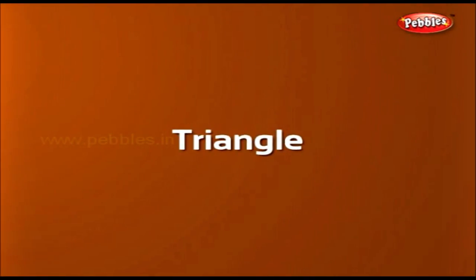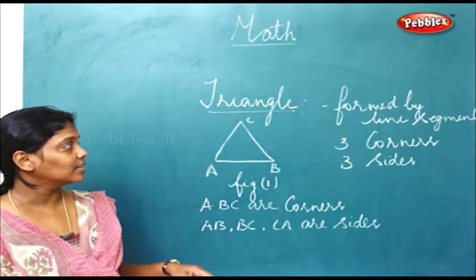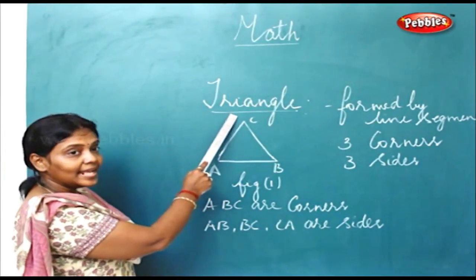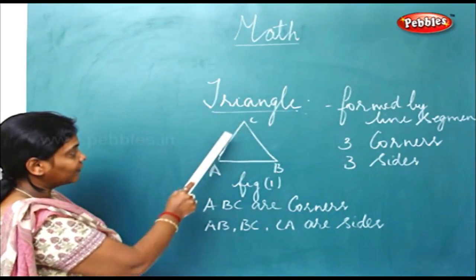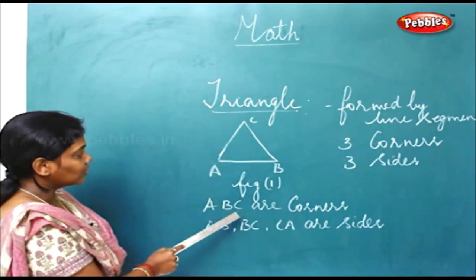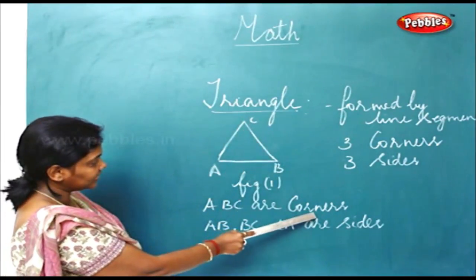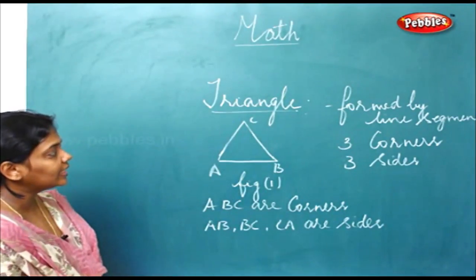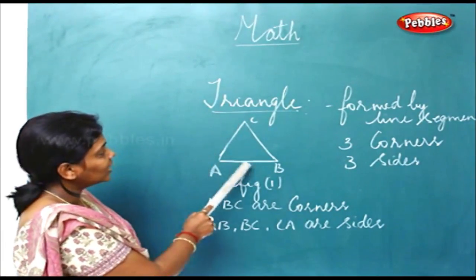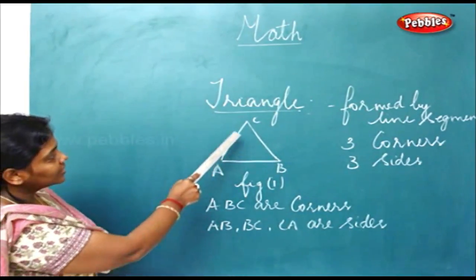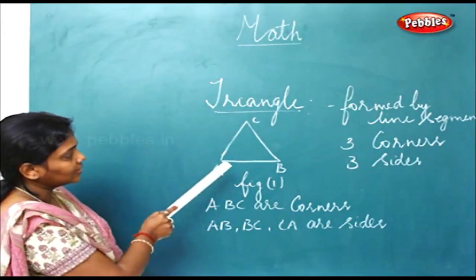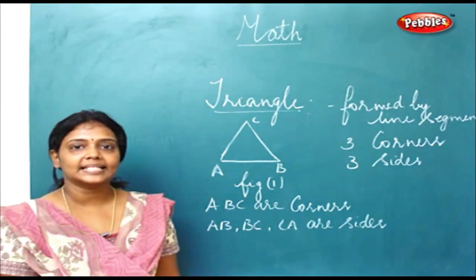Triangle. We earlier saw a square and a rectangle. Now the next shape we are going to see is called a Triangle. From the name 'Tri,' you can see you have 3 lines here. A, B, C are the corners. A-B, B-C, and C-A are the sides. So a triangle can be formed using 3 corners and 3 sides. You saw the 3 corners here? And these are the 3 sides.